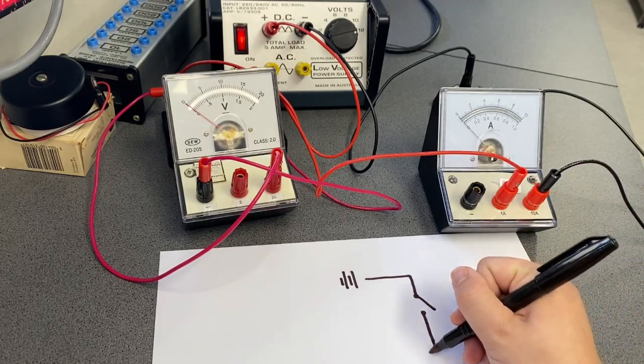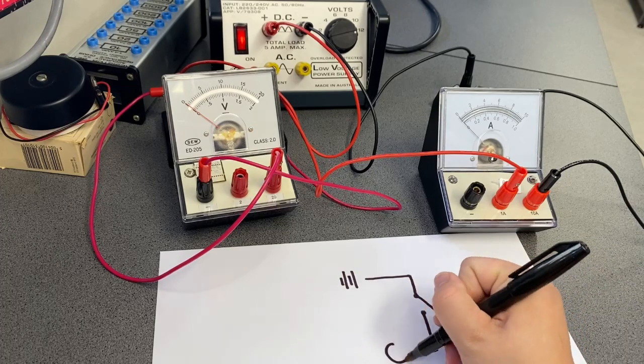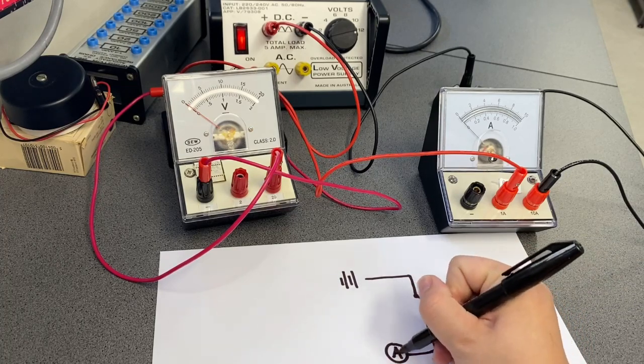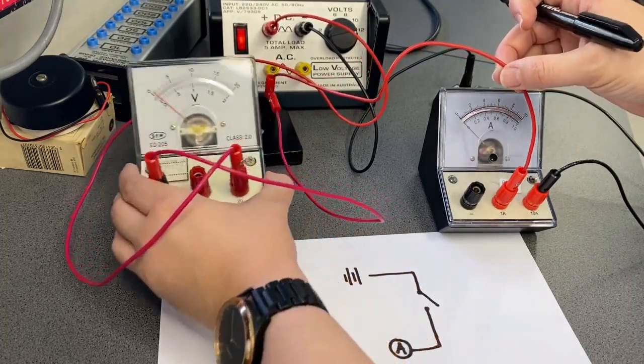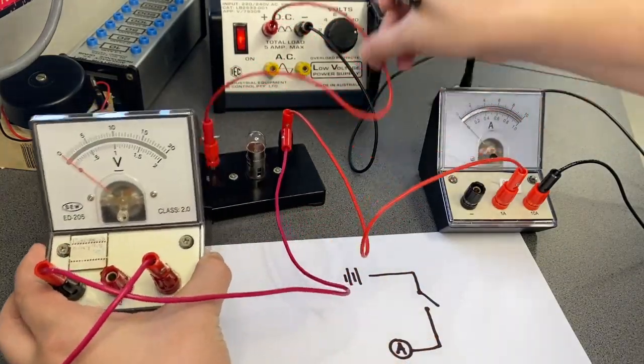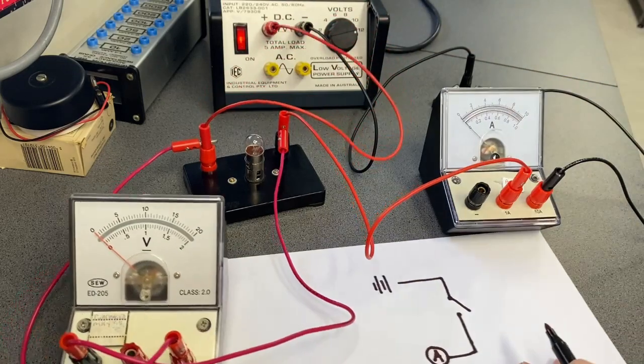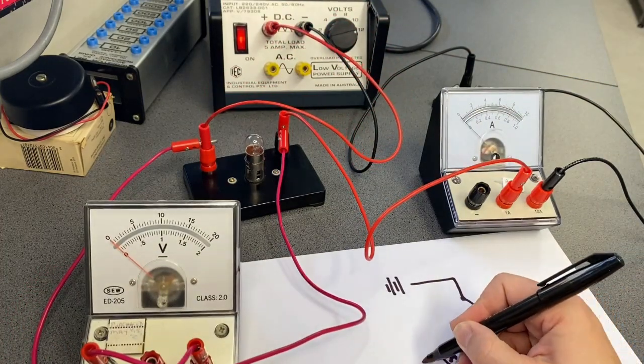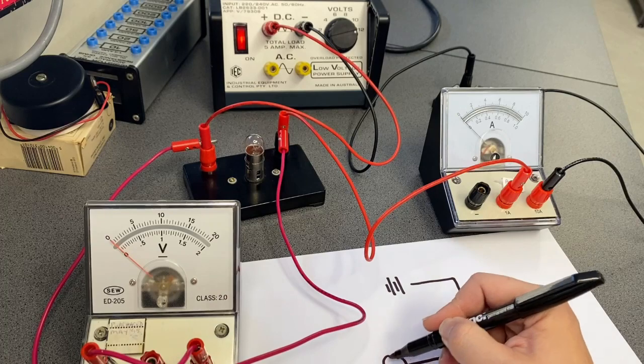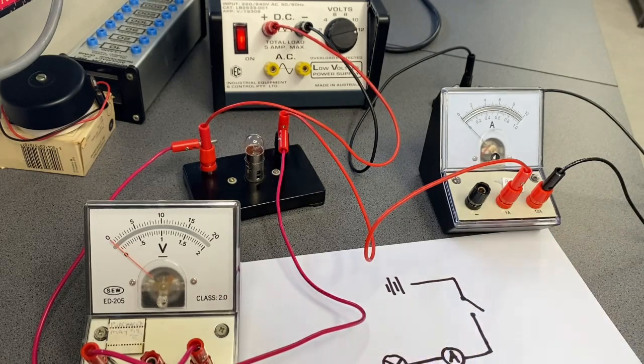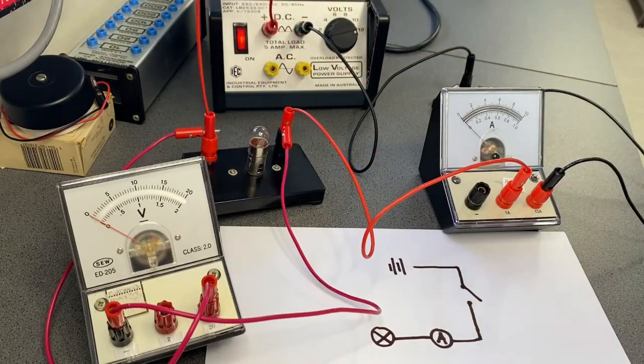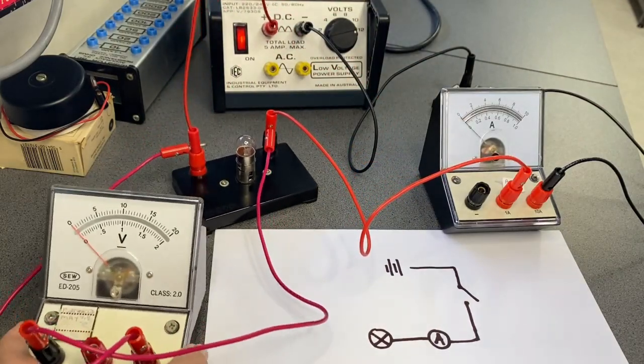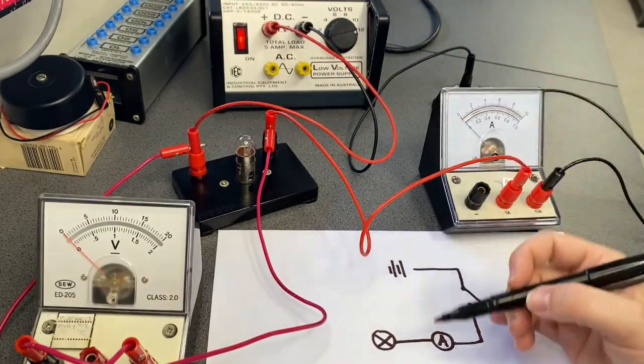We've got another wire that is leading to an ammeter. Then we've got another wire going from the ammeter to a light bulb. And then we've got two directions here. We've got this wire that's going straight back to the power pack, so I'm going to draw that in first.